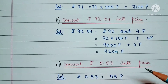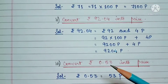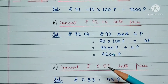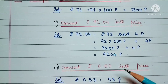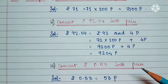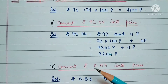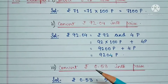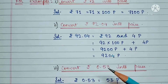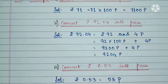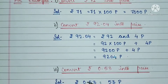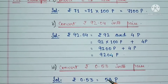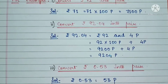Coming to the third example: convert rupees 0 and 53 paise into paise. Since here we have 0 rupees, we will simply write rupees 0 and 53 paise as 53 paise.